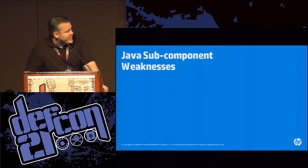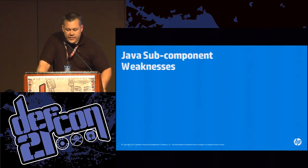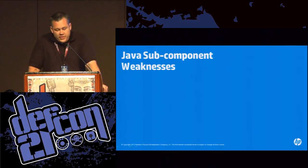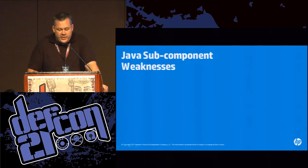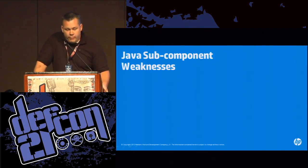Now we're going to take a look at a set of case studies for the most popular vulnerability types we talked about. We'll cover two case studies on sandbox issues in the library subcomponent, two different memory corruption issues in the 2D component, and untrusted pointer dereferencing in the JavaFX component. These POCs were just released and this is probably only the second time they've been shown publicly.